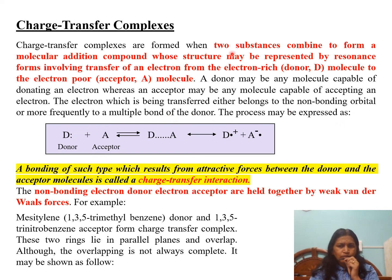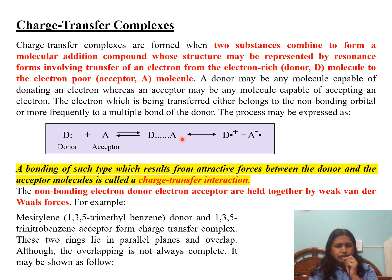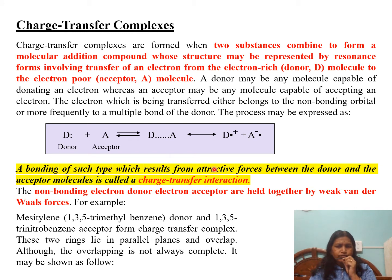This process can be represented as an equation. The donor has a lone pair of electrons; the acceptor is poor in electrons. A weak bond is established between them. When electrons are completely transferred, the acceptor acquires a negative charge and the donor acquires a positive charge. After dissociation, both carry one electron each. This type of bonding resulting from attractive forces between donor and acceptor is called a charge transfer interaction.